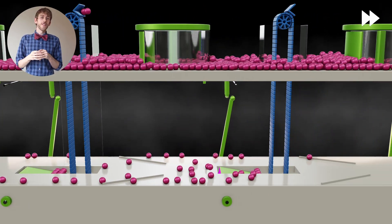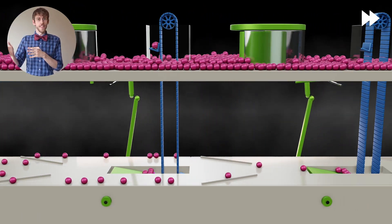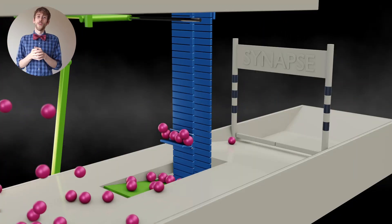So this way the signal travels on until it reaches the end. This is the basic principle of nerve signals.